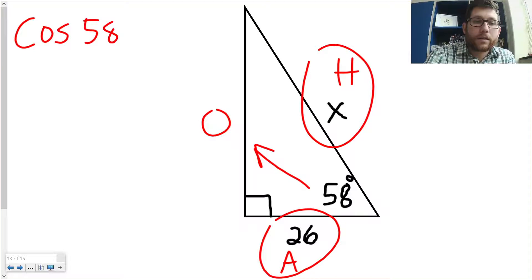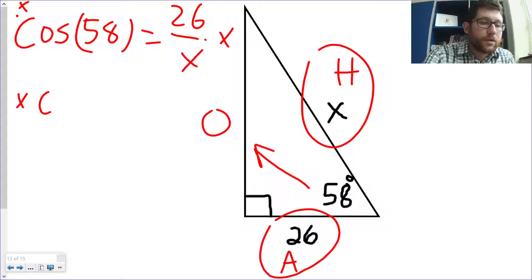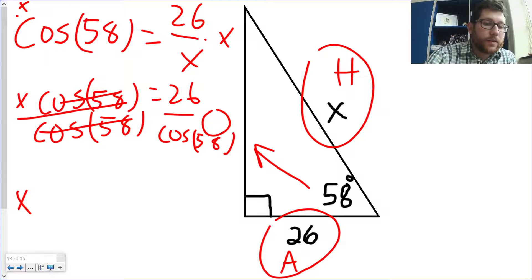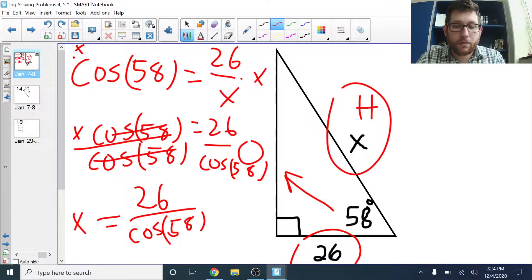So, if we set this up, it's going to be cosine of 58 is equal to 26 over X. All right. Let's solve this thing out for X. I'm going to multiply both sides by X. So, I've got X cosine 58 is equal to 26. Divide both sides by cosine 58. So, I end up with these guys canceling out. So, I've got X is equal to 26 all over cosine of 58.